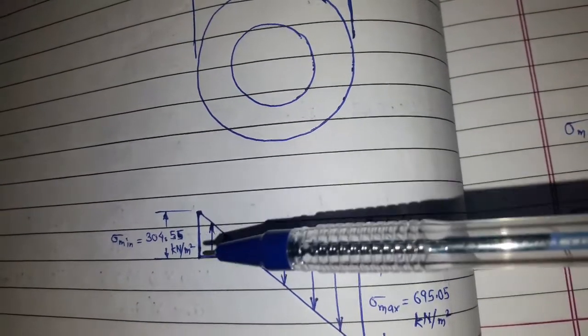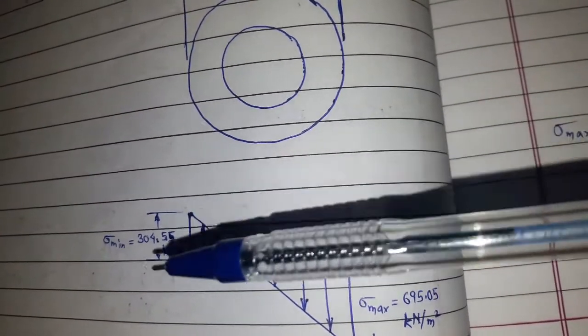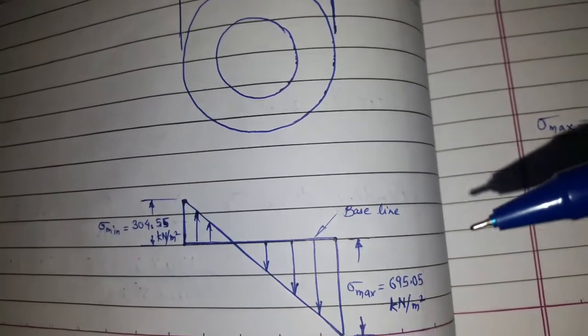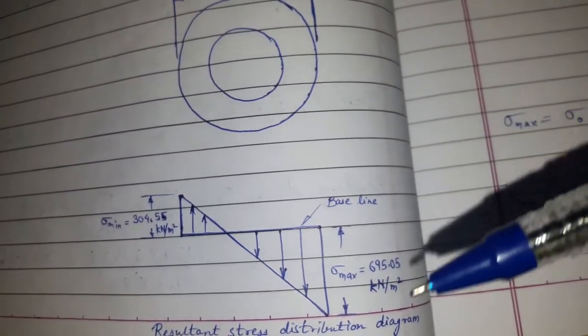So this is compressive and this is tensile. The sign is not required over here, we can just write the value. So this is resultant stress distribution diagram.